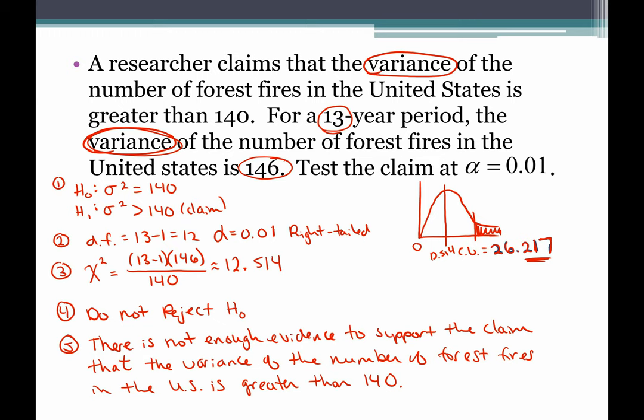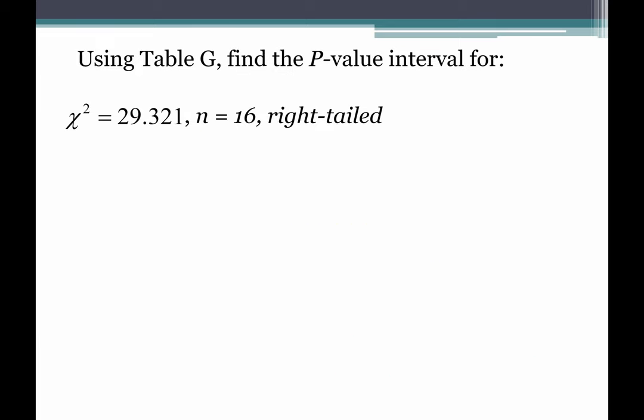The other type of hypothesis testing we need to know is the p-value method — and again, you need to know the five steps for each, including what's required at each step. From the formula card, only formulas are provided, so we need to know the steps. I want to focus specifically on how we use Table G to find the p-value. For chi-square, we can only get an interval — it's like the t-distribution table, but unfortunately the table is our only choice since we have no technology for chi-square p-values.